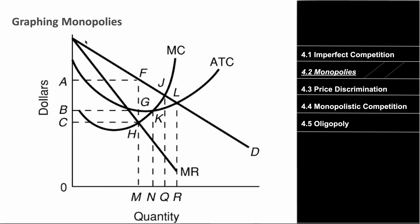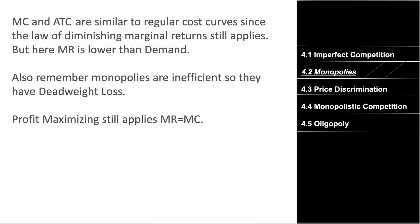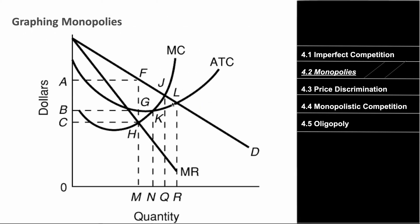Here's a graph for a monopoly. Notice demand and then marginal revenue — marginal revenue is below demand. You still have marginal cost, which looks like a Nike swoosh due to diminishing marginal returns. The ATC is still V-shaped. Remember: for monopolies, the demand curve and marginal revenue curve are separate, with MR below demand. Monopolies are inefficient and often have deadweight loss.